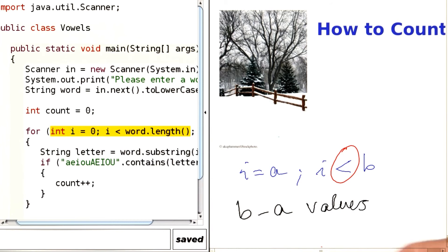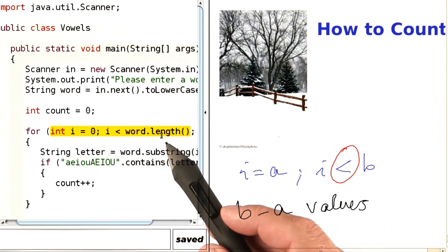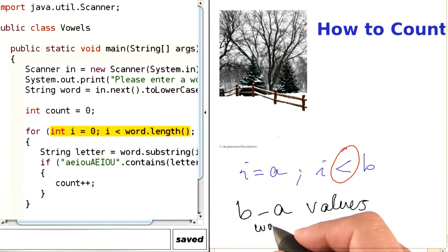So when we look at our formula over here, in this case A is 0 and B is word.length. So how many iterations do we have? We have word.length minus 0 iterations, and that makes perfect sense because we have one iteration for every letter in the word, and word.length is the number of letters in the word.